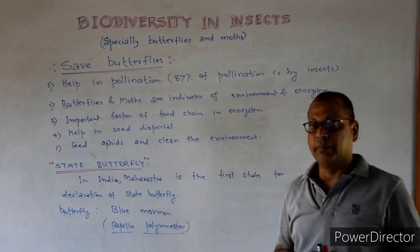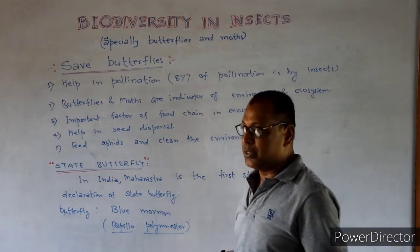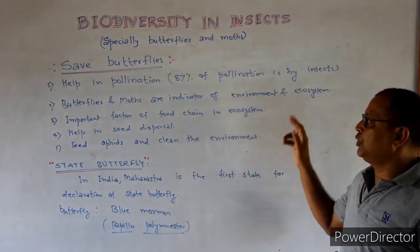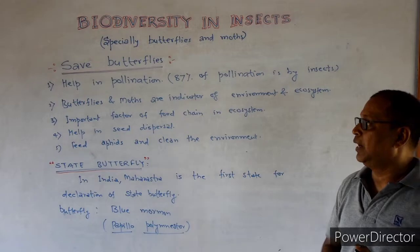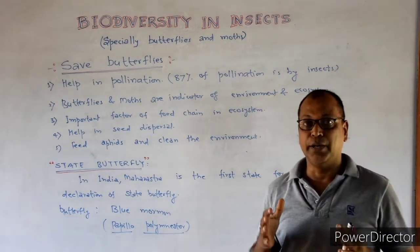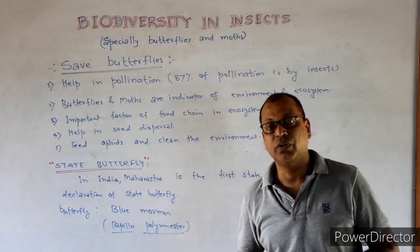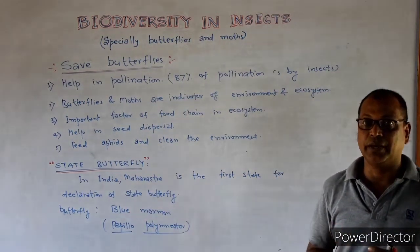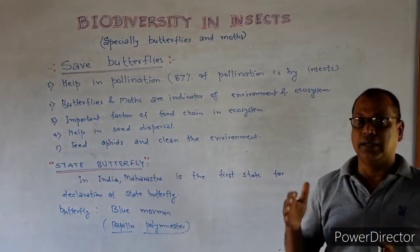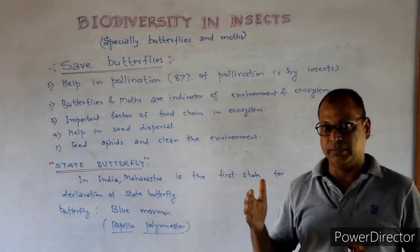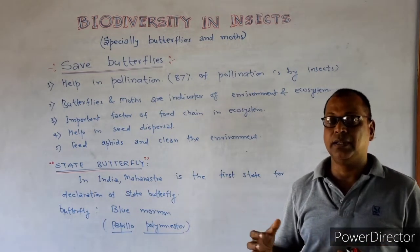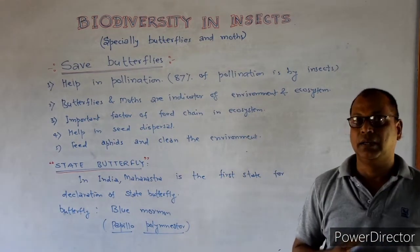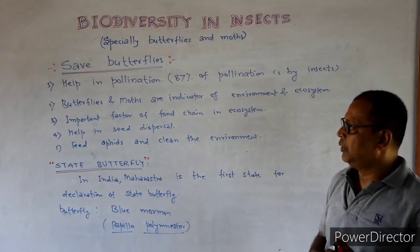Butterflies and moths are also indicators of the environment and ecosystem, and they are an important factor in the food chain. In the food chain, lizards and birds feed on butterflies for their food.